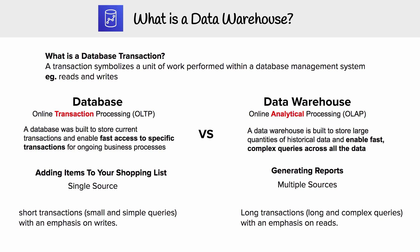On the data warehouse side, it runs on an online analytical processing system — OLAP. OLAP is all about long transactions: long and complex SQL queries with an emphasis on reads. A data warehouse is built to store large quantities of historical data and enable fast and complex queries across all data. The utility here is business intelligence tools generating reports. A data warehouse isn't a single source — it takes data from multiple sources like DynamoDB, S3, and Postgres — all coming into one place so that we can run complex queries, though not too frequently.